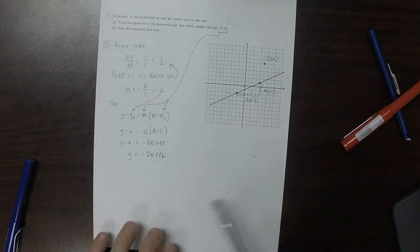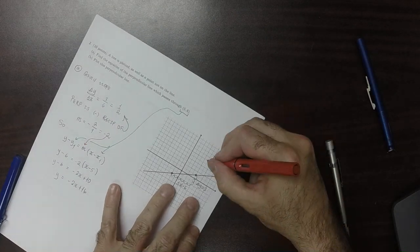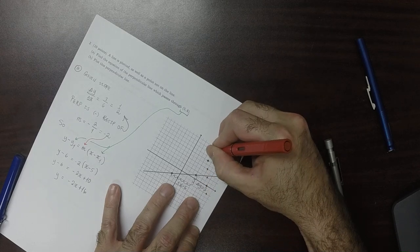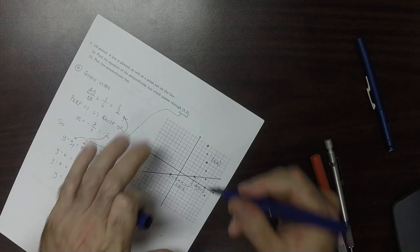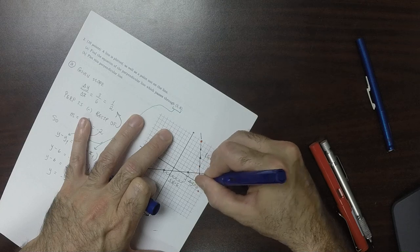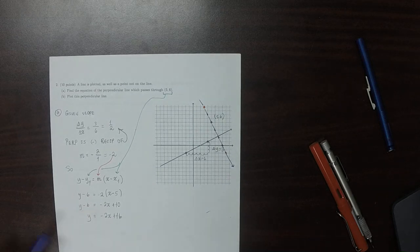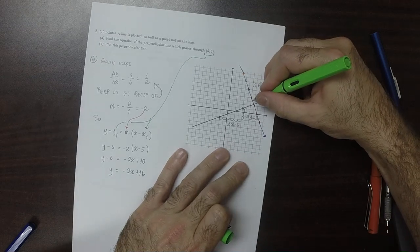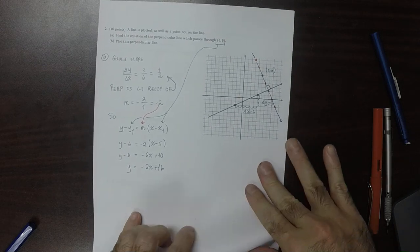And then part b, let's plot that. So I can see that the slope is negative 2, so it would look like this. And notably, I can see, just by the eye, that that looks pretty good. It looks more or less perpendicular.